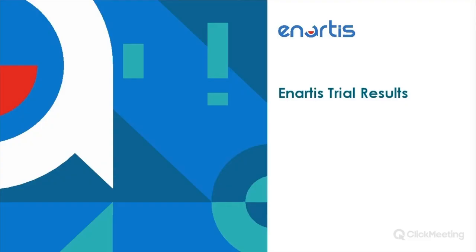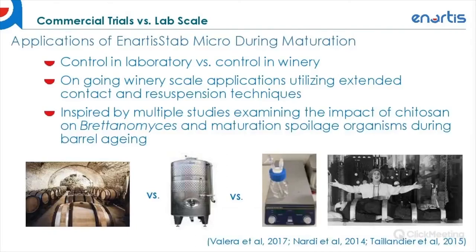Before sharing some internal trial results, I wanted to talk through the differences between commercial trials versus lab-scale trials. In the lab we have considerably more control than in a commercial setting, allowing us to remove various parameters to better identify efficiency. The wines used in this trial had no SO2 and were sterile filtered to remove any variables that could skew results. We have ongoing winery-scale applications of Anardis Stab Micro during maturation mimicking the lab setup, and we will hopefully share more data from those trials in the future.